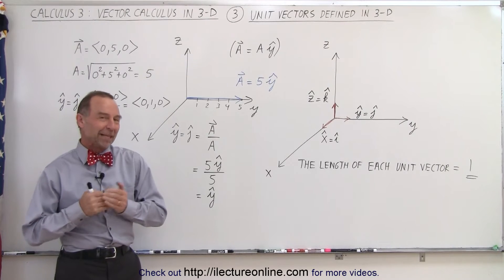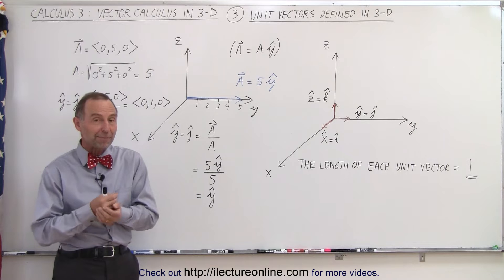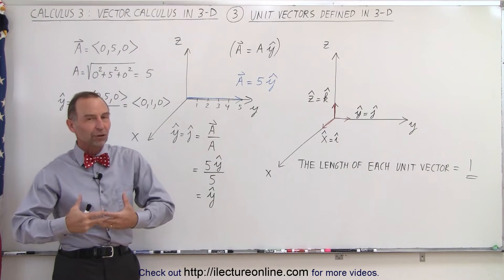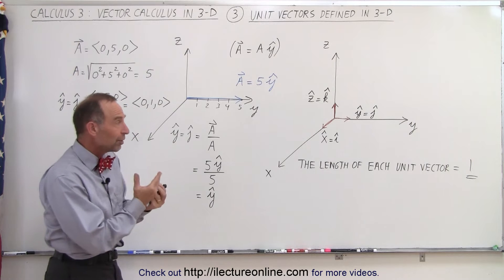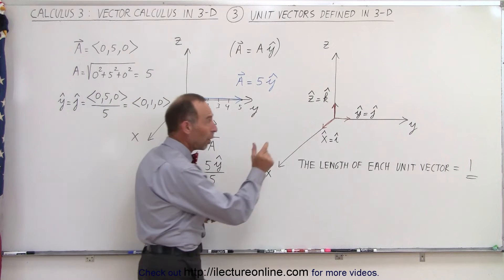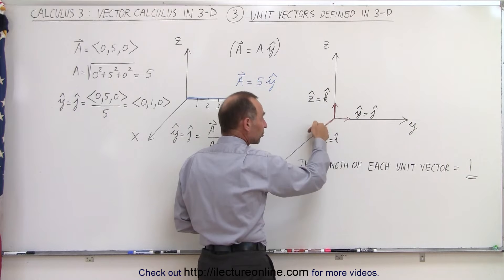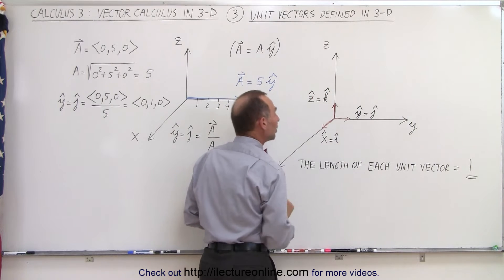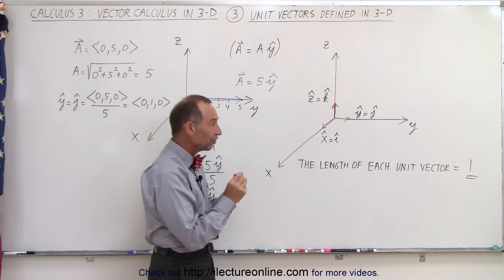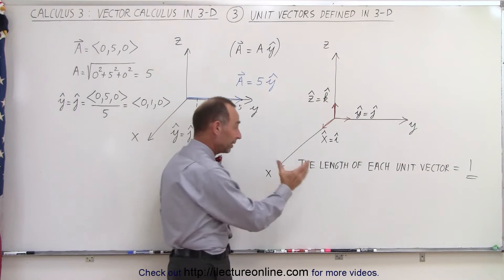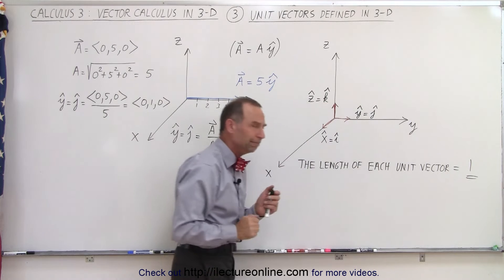Welcome to our lecture online. In this video we're going to get a better understanding of what we mean by unit vector — in this case the three unit vectors in three-dimensional space. The three unit vectors are small little vectors pointing in the three directions: the x direction, the y direction, and the z direction. The length of each of those small little vectors is equal to one. By definition, the length of each unit vector is simply equal to one.